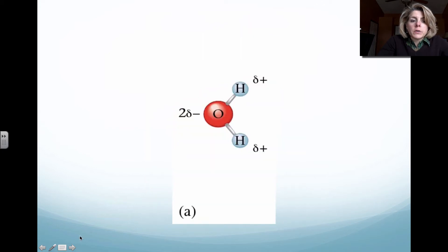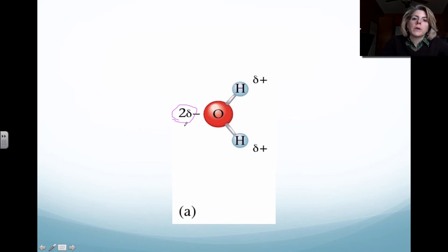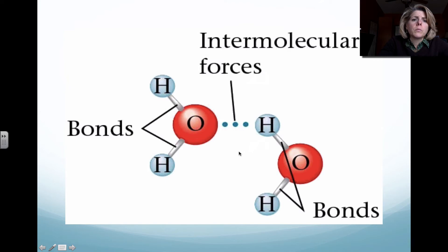Here's water. Oxygen has a two delta minus charge, so it's strongly attracting both sets of electrons from the two covalent bonds, and each hydrogen has a slightly positive charge as a result. When two water molecules come in contact with each other, they develop what we call intermolecular forces. Please remember this dot is not a covalent bond — it's just an attraction between two different molecules. The oxygen in one lines up with the hydrogen of another.